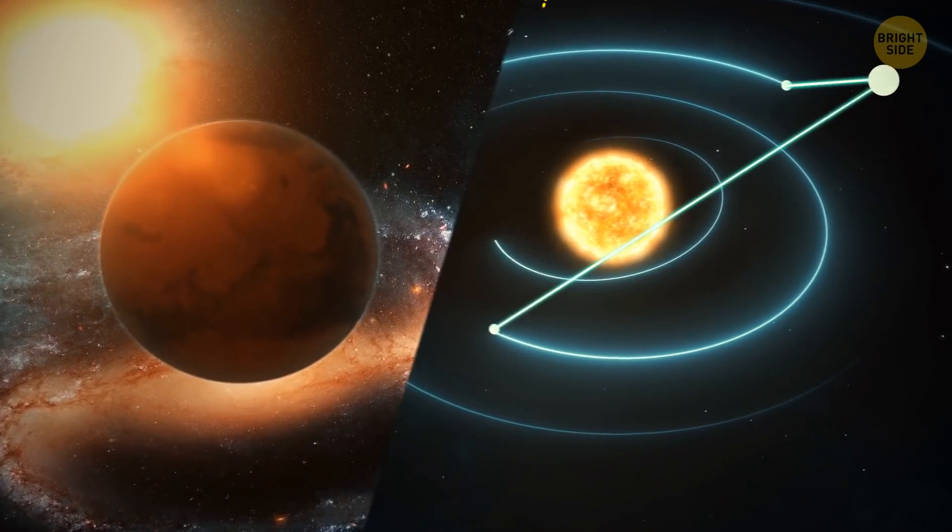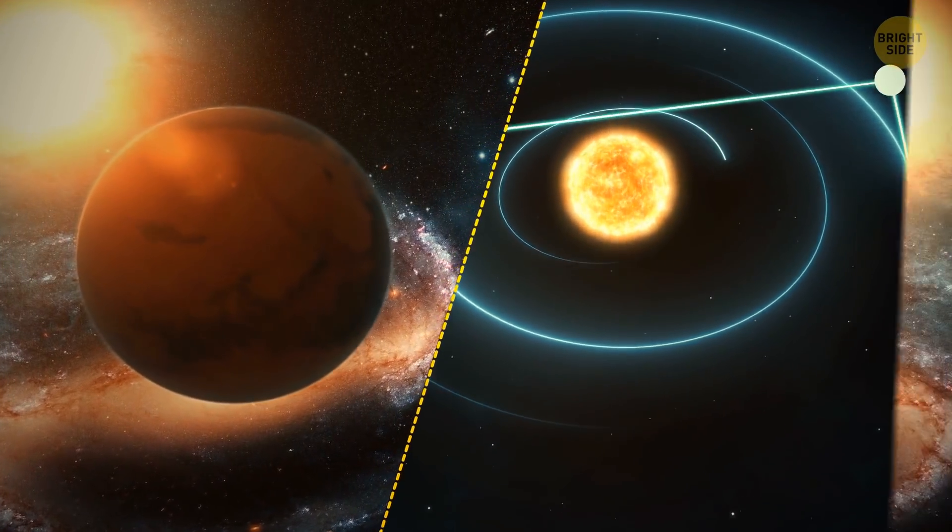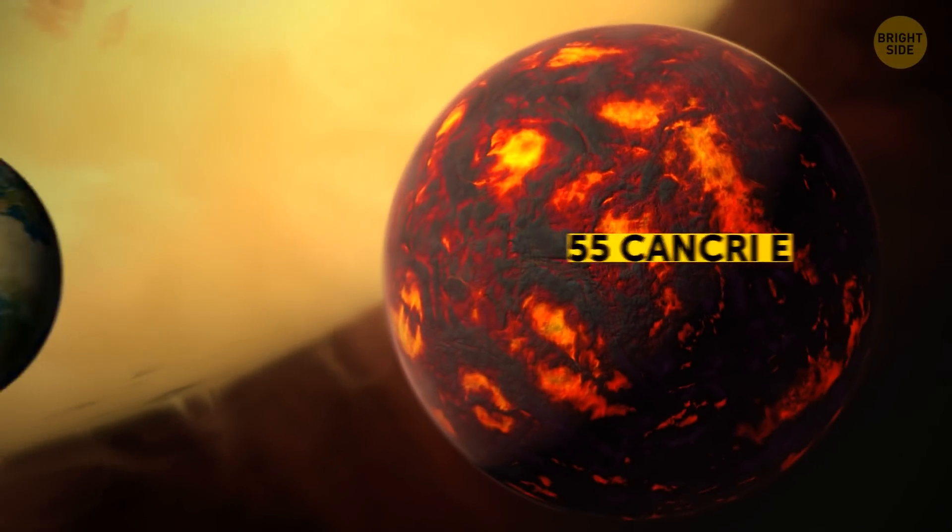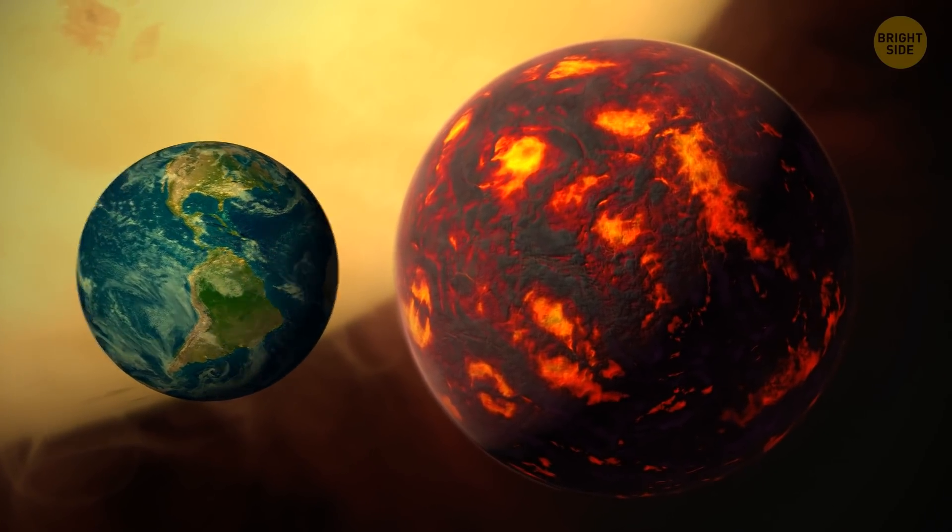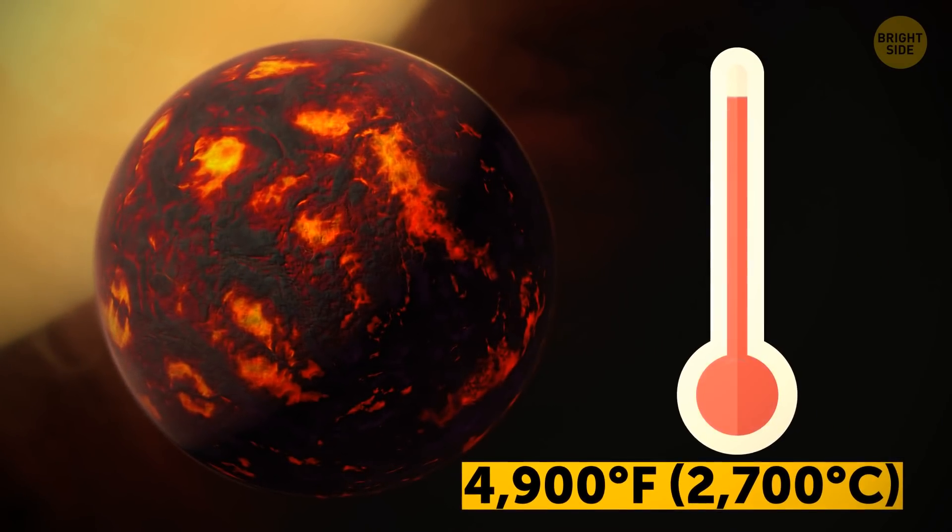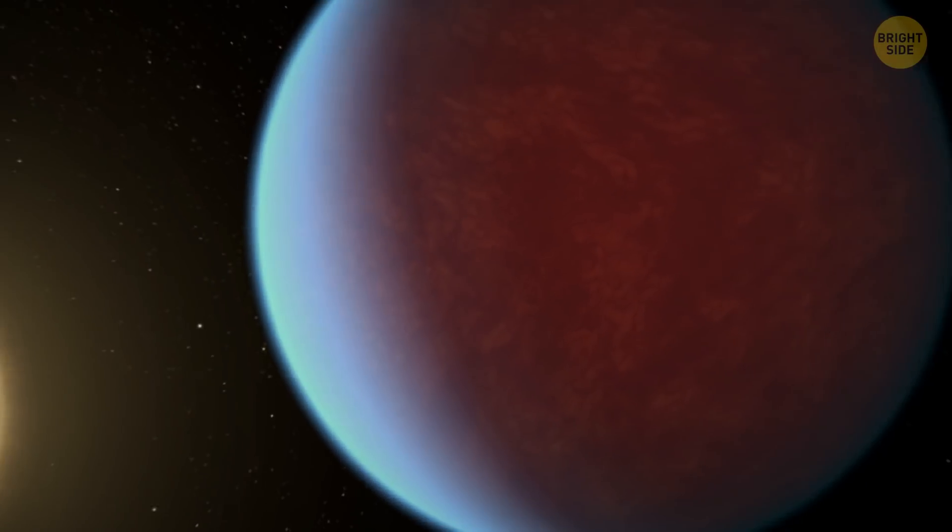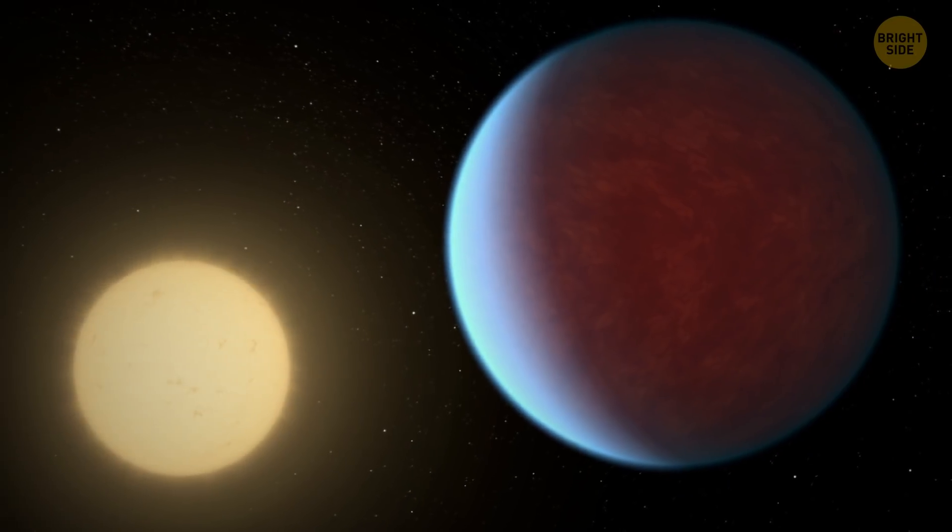55 Cancri e is about twice the Earth's size, with the temperatures of up to 4,900 degrees. Perfect conditions to turn carbon into diamonds. Yup, one-third of this planet is covered in carbon, which makes this diamond object one of the most expensive planets.